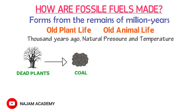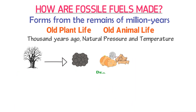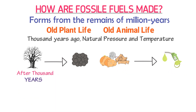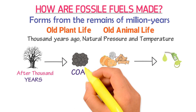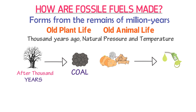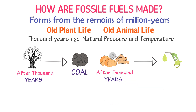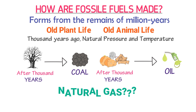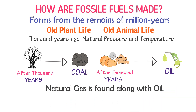Similarly, thousands of years ago, natural pressure and temperature converted dead marine or aquatic life into oil. To simplify it further, consider a large tree — if you cut it, after hundreds or thousands of years it will convert into coal due to pressure and temperature. Consider marine life that dies; after hundreds or thousands of years, it will convert into oil. Natural gas is usually a byproduct of oil — it is formed along with oil and is present at the top level of oil.